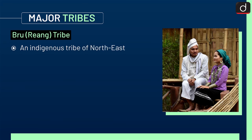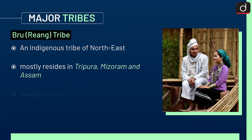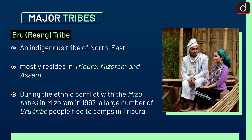Next is the Brew or Riyang tribe. It is an indigenous tribe of the Northeast, mostly residing in Tripura, Mizoram, and Assam. During the ethnic conflict with the Mizo tribes in Mizoram in 1997, a large number of Brew tribe people fled to camps in Tripura.